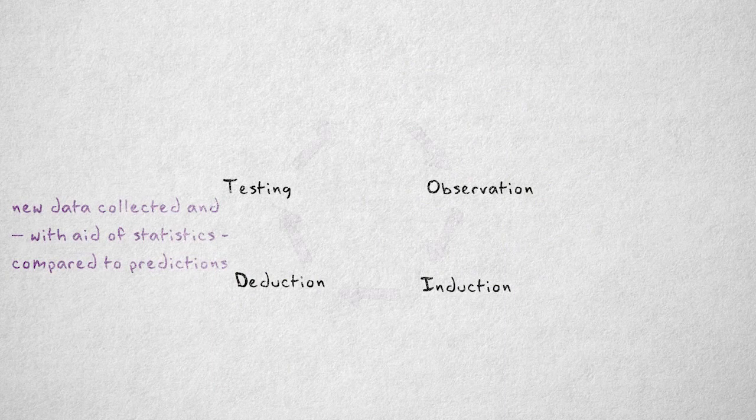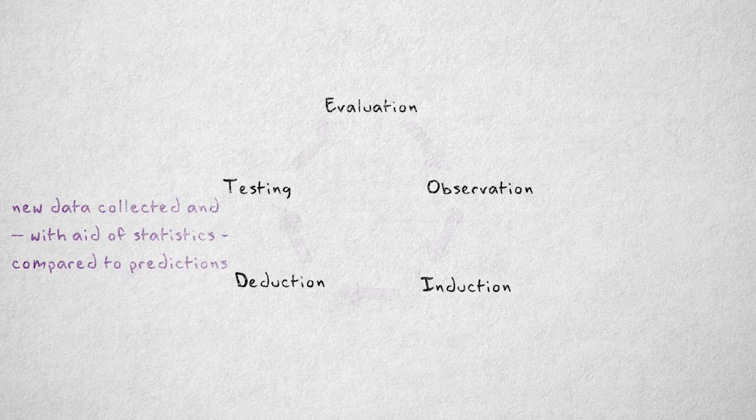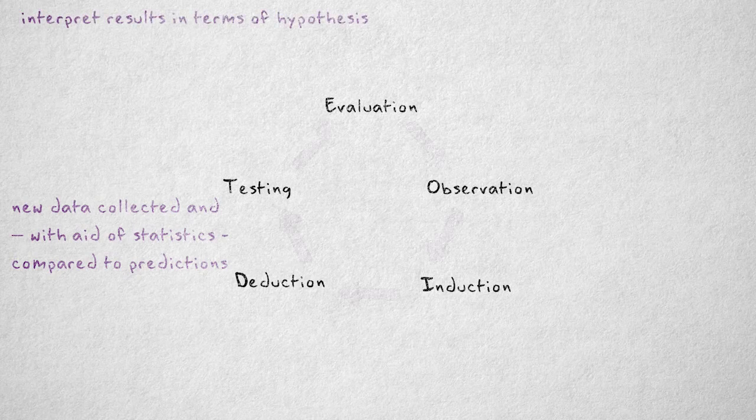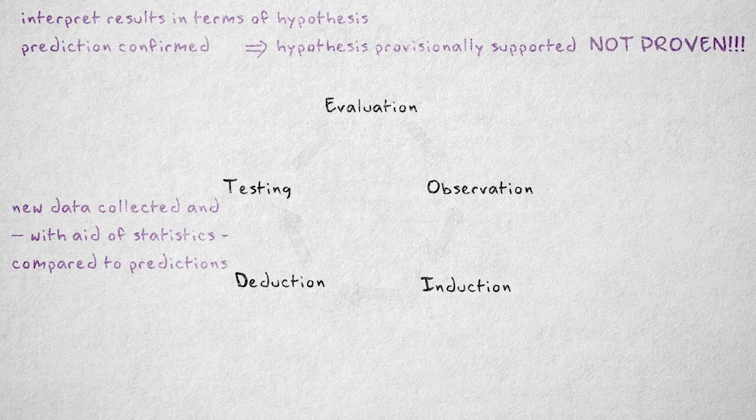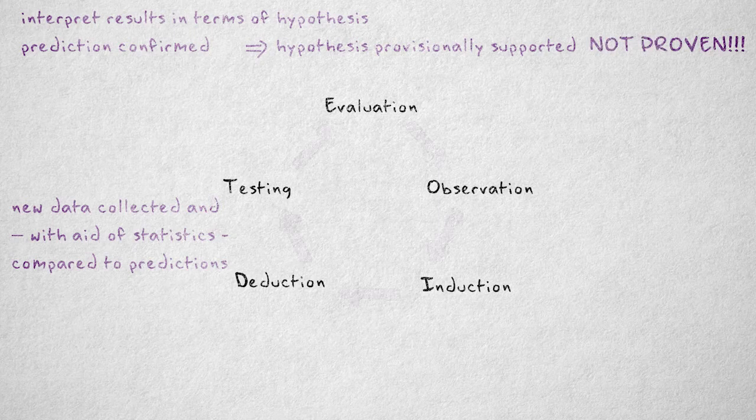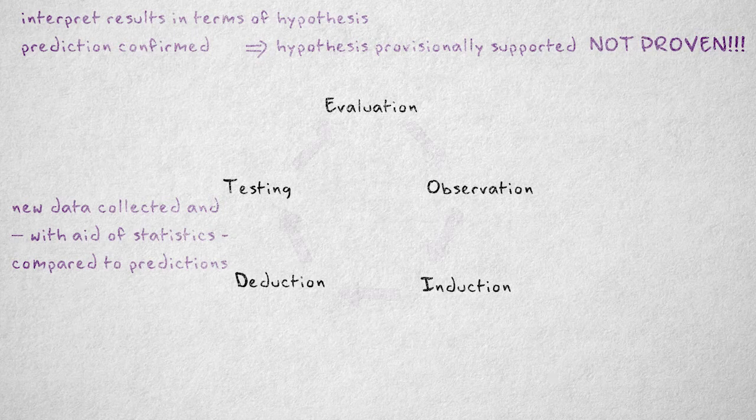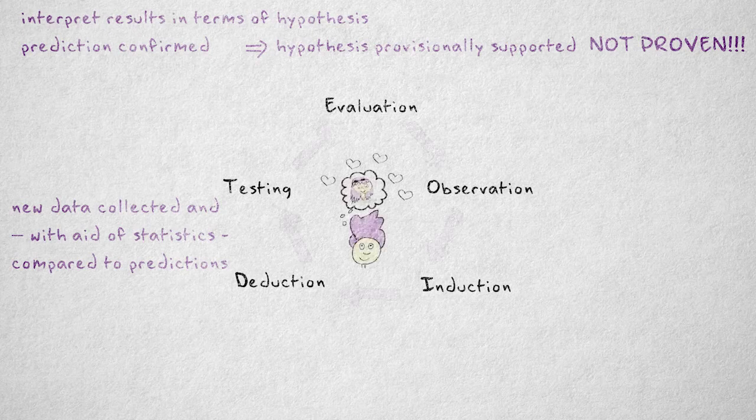In the evaluation phase, we interpret the results in terms of our hypothesis. If the prediction was confirmed, this only provides provisional support for a hypothesis. It doesn't mean that we've definitively proven the hypothesis, because it's always possible that in the future we will find somebody who just loves their mother-in-law.